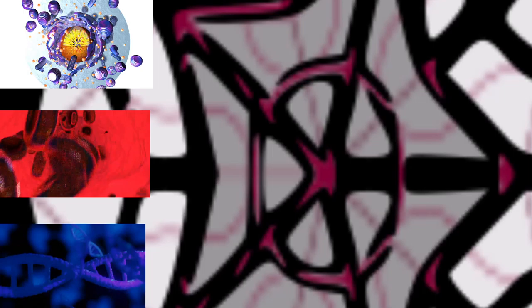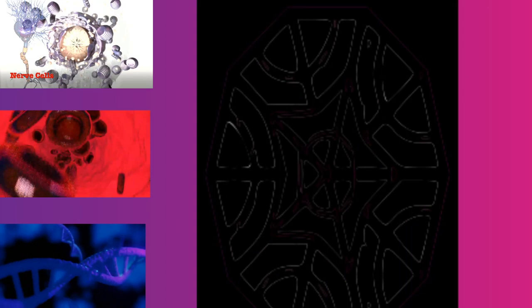Leukocytes, erythrocytes, and thrombocytes are blood cells. Epithelial cells are simple cells which cover organs. Nerve cells form the nervous system. Adipose cells store fat. Muscle cells and myocytes are responsible for movement. Bone cells form and dissolve bone. Secretory cells form glands.